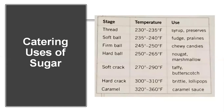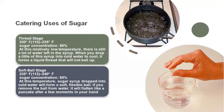Now we will move to the different stages of cooking of sugar. When we start cooking sugar there are two ways: a wet method or a dry method. In the dry method, no water is added. In the wet method, a little water to just wet the sugar is added. Under that there are many stages shown in a chart. The first one is the thread stage, obtained at 110 degrees centigrade. Sugar concentration is 80%. At this relatively low temperature there is still a lot of water left in the syrup. When you drop a little bit of the syrup into cold water it forms a liquid thread that will not ball up.